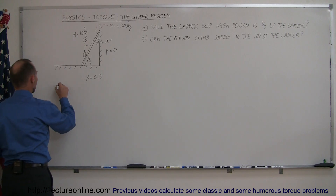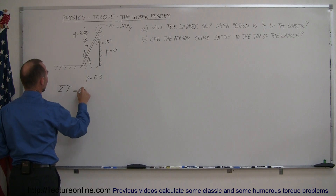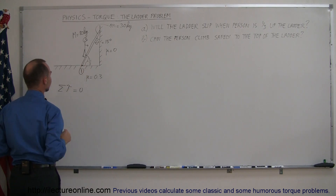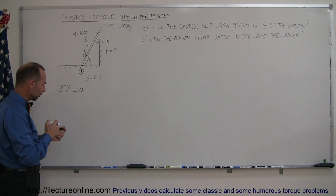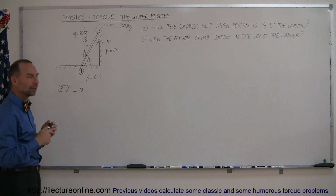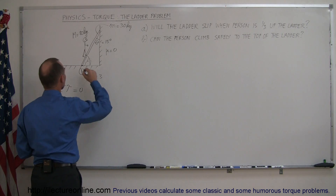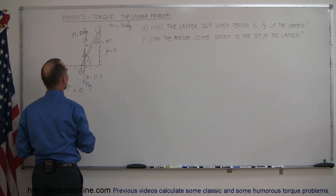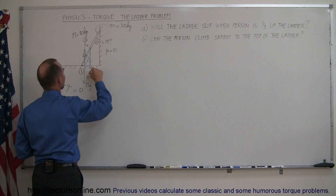Normally what we do here is we start out by saying that the sum of all the torques about some pivot point adds up to zero, so let's assume this point right here is our pivot point. Let's try to find all the forces acting on the ladder. We have the force of gravity pulling the person down — that would be the big MG. Then we have the mass of the ladder, which acts through the center of mass — that would be little mg.